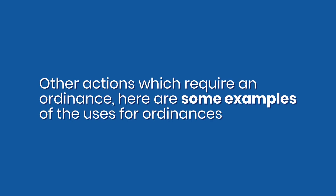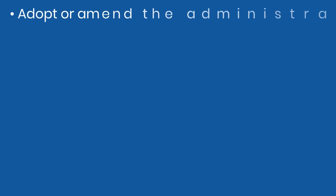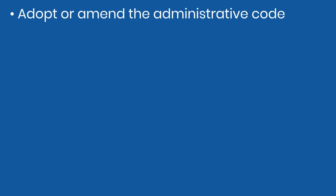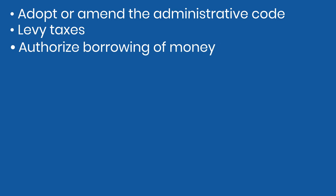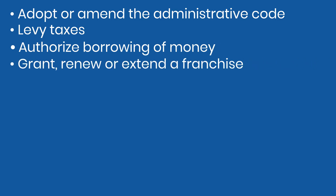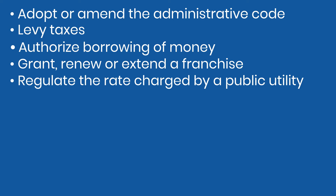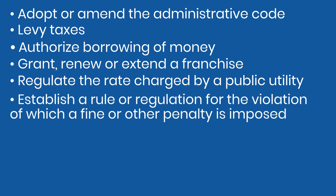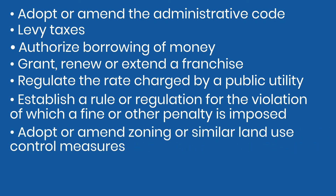If it receives a majority of Assembly member votes in favor, the ordinance is passed. The ordinance may take effect upon adoption or at a later date specified by the ordinance. In addition to other actions which require an ordinance, here are some examples of the uses for ordinances: adopt or amend the Administrative Code; levy taxes; authorize borrowing of money; grant, renew, or extend a franchise; regulate the rate charged by a public utility; establish a rule or regulation for the violation of which a fine or other penalty is imposed; adopt or amend zoning or similar land use measures.